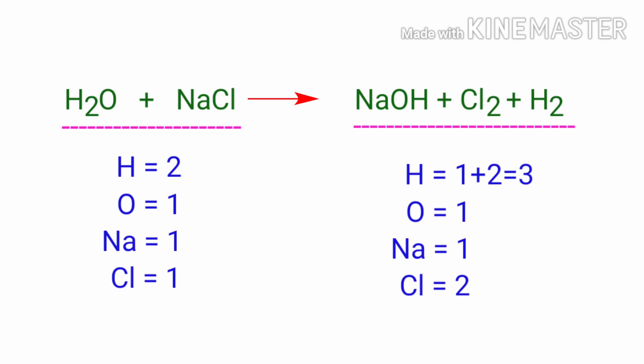If you look at this equation, we can see that the equation is not balanced. In the reactants side, there are two hydrogen atoms, one oxygen atom, one sodium atom, and one chlorine atom present.